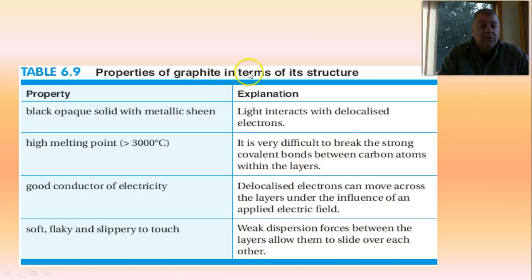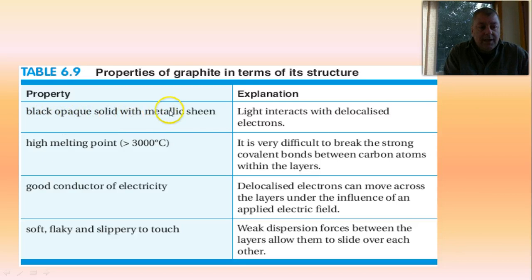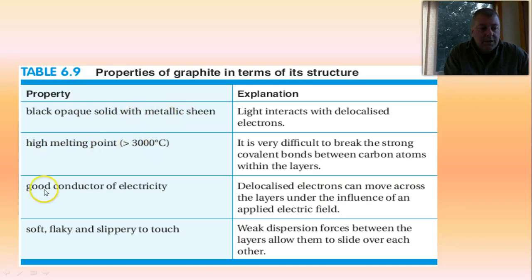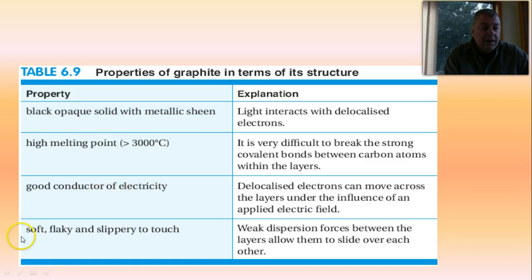So what are the properties in terms of its structure? When you look at it, it's black and opaque, and it's a solid. It has a metallic sheen. It has a high melting point — greater than 3,000 degrees. It's a good conductor of electricity, which is a characteristic the other covalent substances don't have. And it's soft, flaky, and slippery to touch.